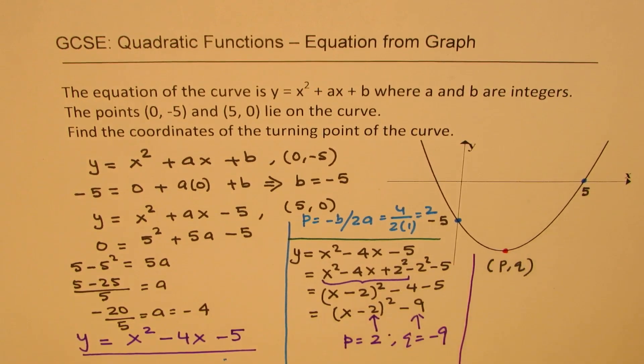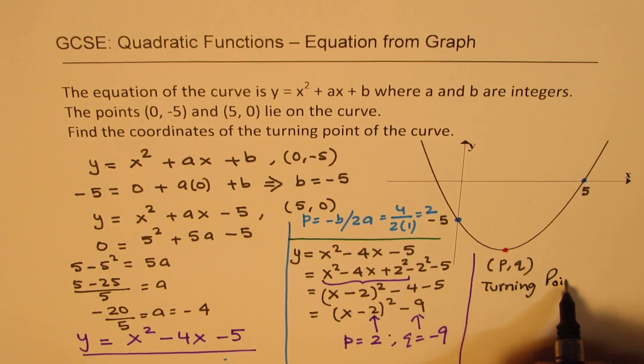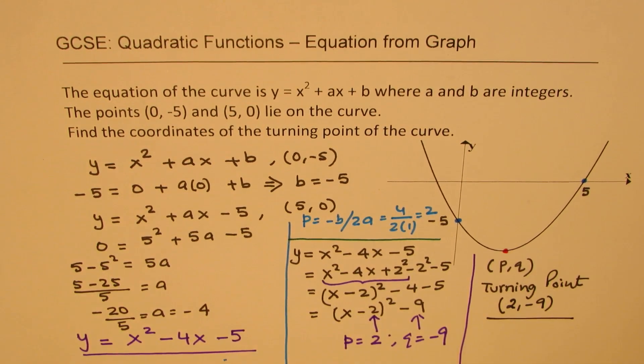So now we can write down the turning point. The turning point will be (2, -9). Is that clear? Perfect.